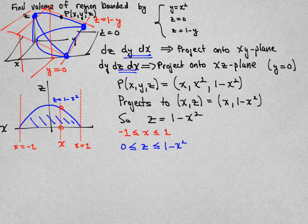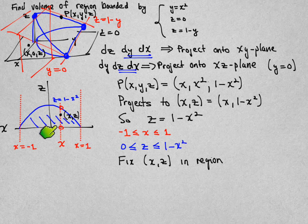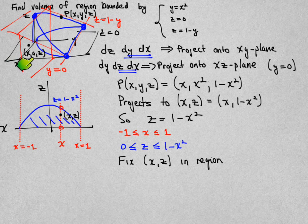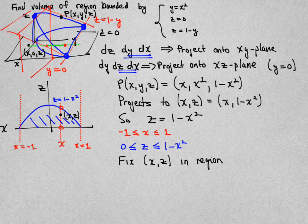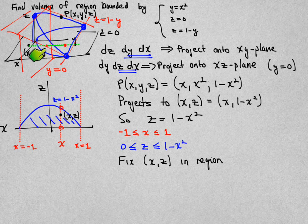And now what we'll do is we'll fix a point xz in that region that I've shaded in that projection. And there it is in the two-dimensional picture. In the three-dimensional picture, it's something back here with a y-coordinate equal to zero. And we're going to extend a line parallel to the y-axis and passing through my region and look at where it enters the region and where it exits.